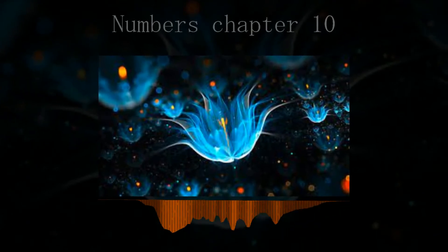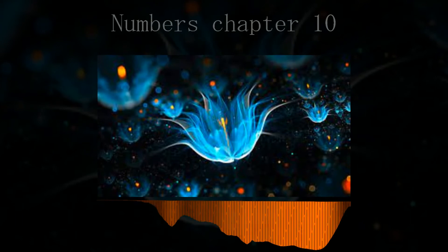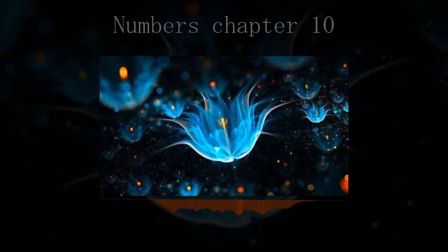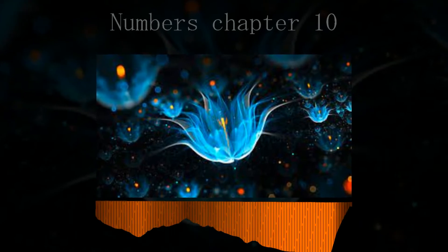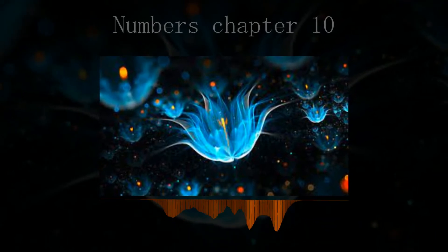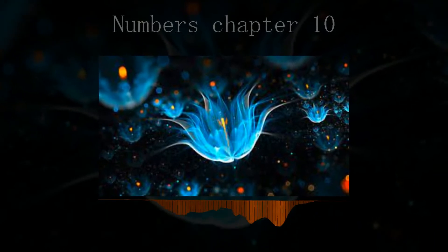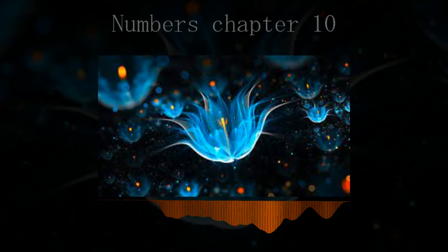Numbers Chapter 10. And the Lord spake unto Moses, saying, Make thee two trumpets of silver, of a whole piece shalt thou make them, that thou mayest use them for the calling of the assembly and for the journeying of the camps.